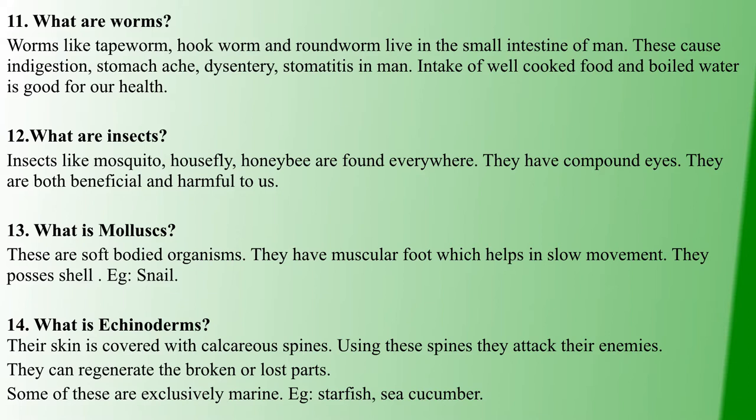Next, echinoderms. What are echinoderms? Echinoderms are a group of organisms whose skin has calcareous spines, which serve as a protective layer. A special feature is that they can regenerate broken or lost parts. These organisms are marine — for example, starfish and sea cucumber.